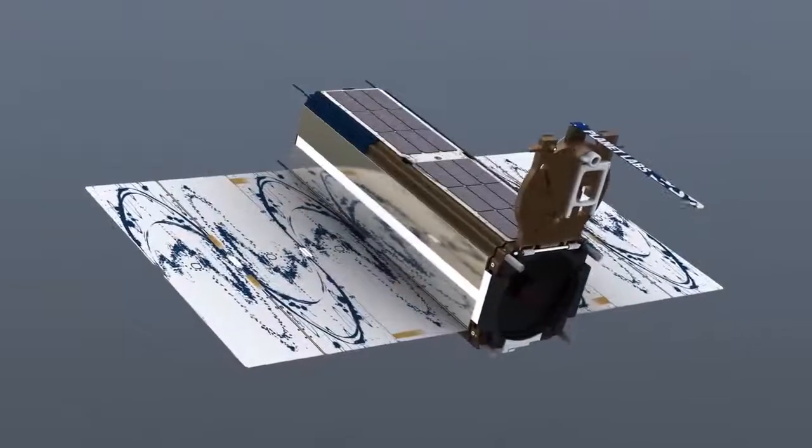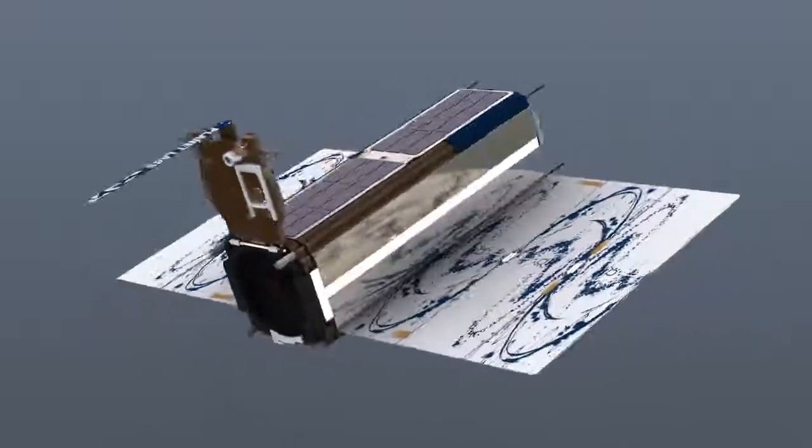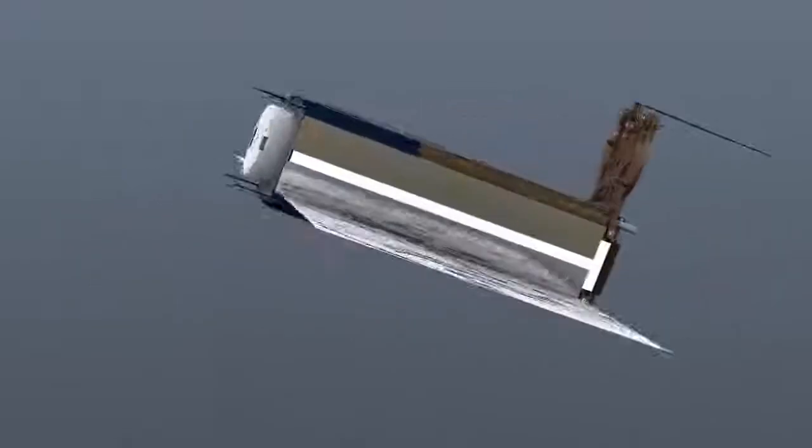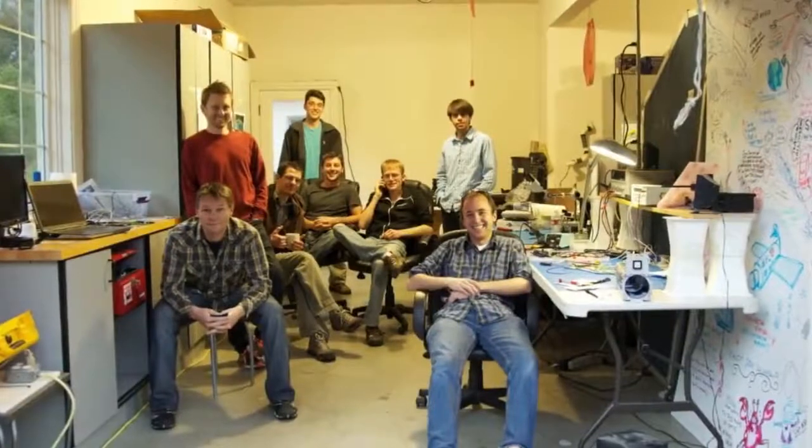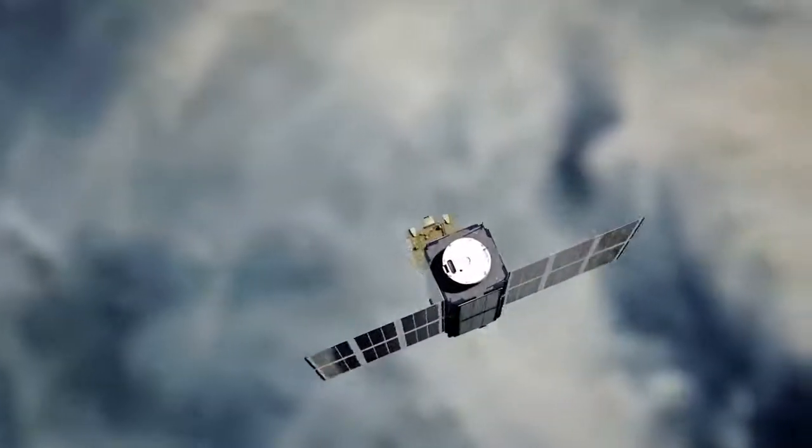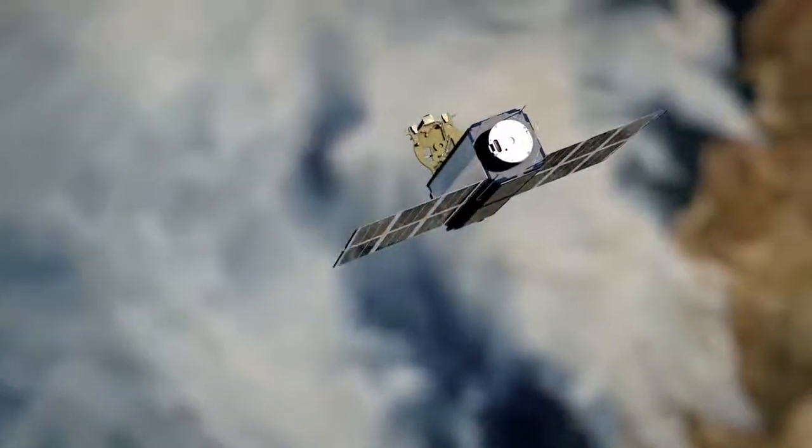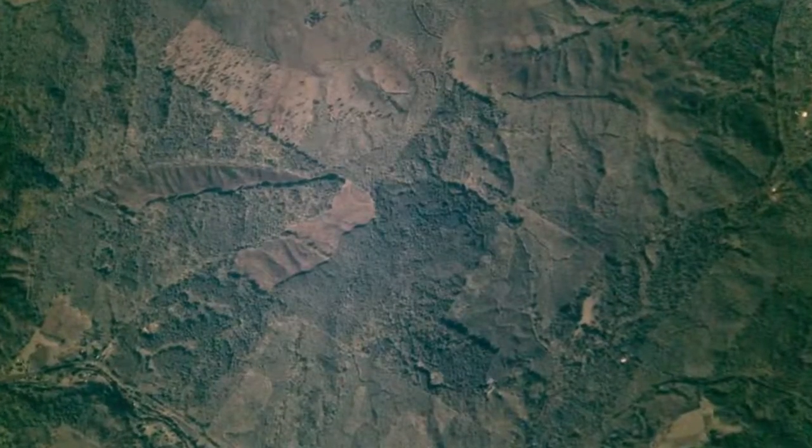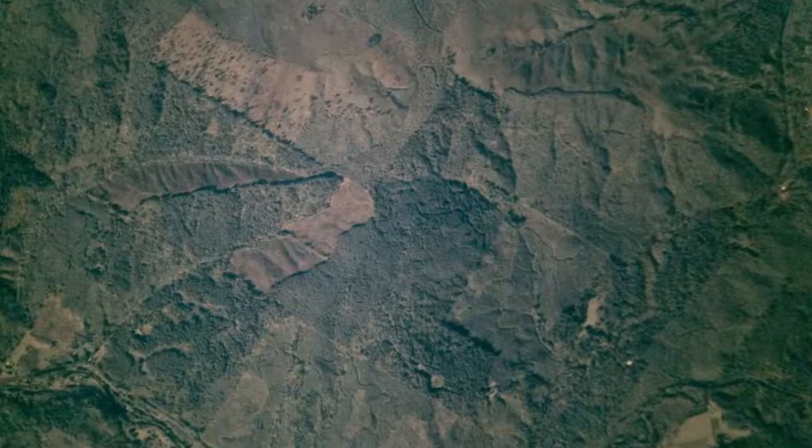And they called it the dove. It's about the size of a loaf of bread. Our doves are basically mainly a big camera with a telescope looking down to take pictures of the Earth. We initially developed the first dove satellite in our garage. So we kept on iterating the dove design. We made it better and better. And eventually we put our first one into space. We had no idea what the quality would be like. We didn't know if it was going to work. But we got an image down and it was so beautiful. And we knew at that point we could make this technology work.